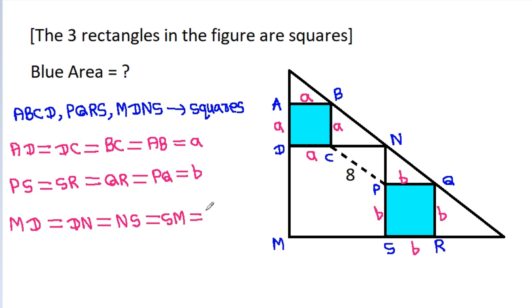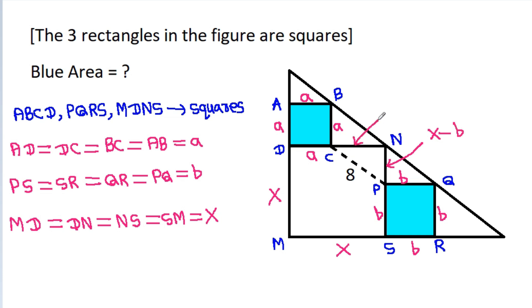Suppose the side of the third square is x, so MT is x, SM is x. And NP it will be x minus b, and CN it will be x minus a.